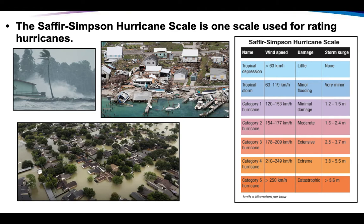We use what's called the Saffir-Simpson hurricane scale to rate hurricanes. You can see the characteristics for a tropical depression or tropical storm, and then look at the different categories of hurricanes. Category five is the most devastating, damaging hurricane — wind speeds greater than 250 kilometers per hour, where you're going to see catastrophic damage. A lot of homes built near hurricane areas are built on stilts above the ground, and they frequently have ways for their windows to be easily boarded up with plywood, or newer construction homes have things already in place.